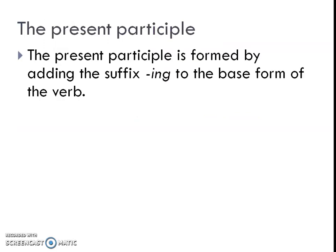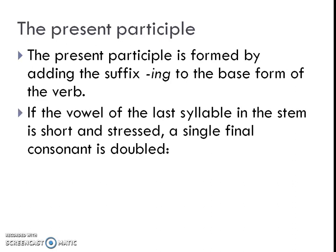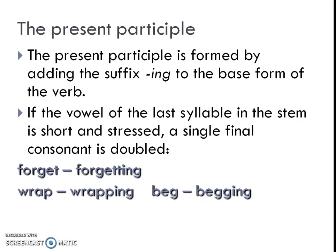The present participle is formed by adding the suffix -ing to the base form of the verb. If the vowel of the last syllable in the stem is short and stressed, a single final consonant is doubled. Like: forget — forgetting; rap — rapping; beg — begging. The last syllable is short, so we double the consonant. Run — running. The gerund coincides formally with the -ing participle, as both use the -ing form.